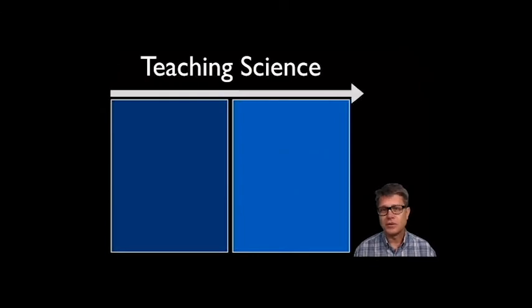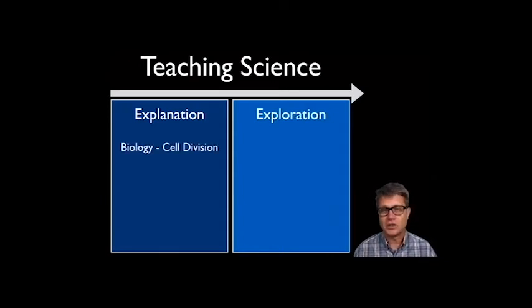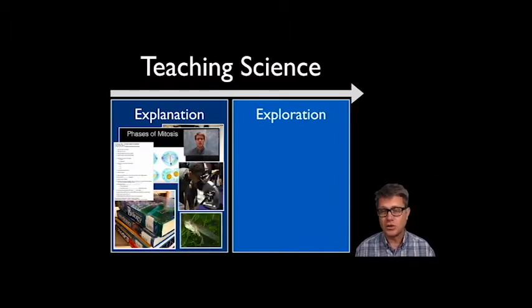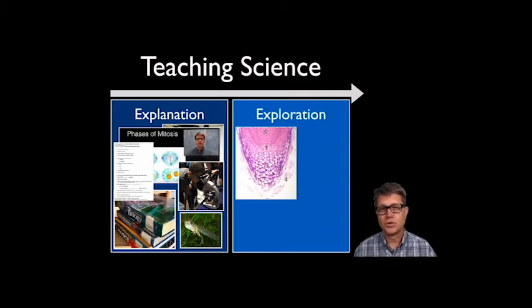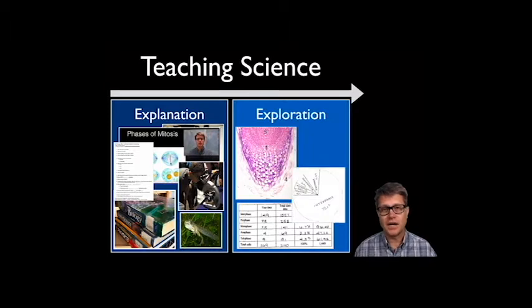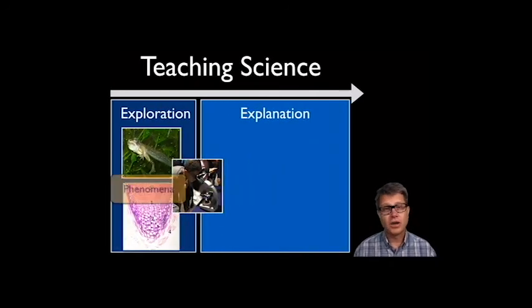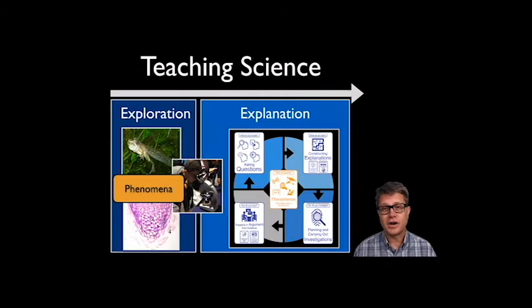If you think about a typical unit, we usually start with explanation and then go to exploration. For example, teaching a unit on cell division: students might read first, then lecture, maybe a video, a worksheet, I show them how to use a microscope, and we look at cells going through division — all of this is me explaining science at the beginning. At the end there might be a lab, an exploration phase where they look at onion root mitosis. The idea of using phenomena and sense-making is that we shift the exploration to the beginning — we start with those really interesting phenomena and put the student at the center of trying to understand how things work.